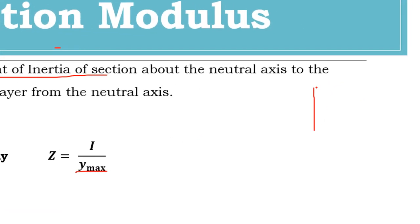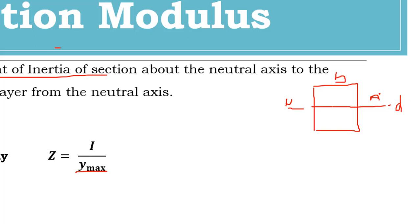Consider a rectangular section. The neutral axis is at the center. The moment of inertia I of this section is bd³/12. The distance from the neutral axis to the outermost layer is y = d/2. So the ratio I upon y gives us the section modulus. The unit is mm³ because I has units of mm⁴ and y has units of mm, so mm⁴ divided by mm gives mm³.